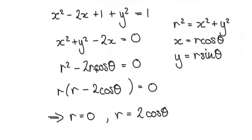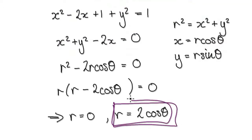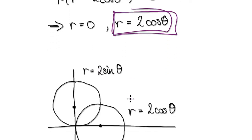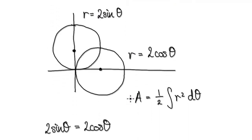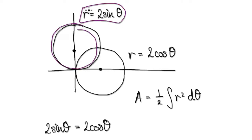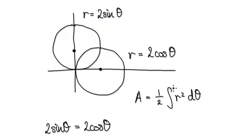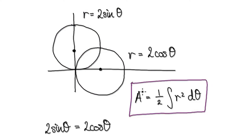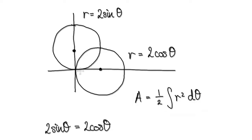We've done this before, so the formula for the other circle is given by r = 2cosθ. We are now at the stage where in polar form the equation for this circle is r = 2sinθ, and the equation for the other circle is r = 2cosθ. If you want to work out the area, you integrate it using the polar area formula — we've done this before. The problem is we're trying to work out this specific purple area.